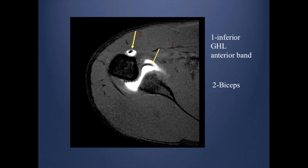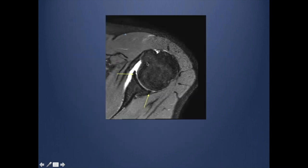On MRI, you get very beautiful anatomy. At the inferior part of the joint, you can see contrast pooling around the biceps tendon within its tendon sheath, and the anterior band of the inferior glenohumeral ligament. Moving more superiorly, you can see the anterior and posterior labrum beautifully — triangular, low signal — with no overlapping with the adjacent subscapularis. That is the beauty of the direct arthrogram.